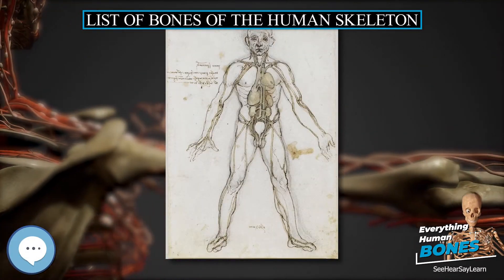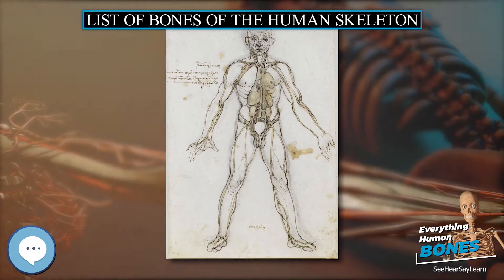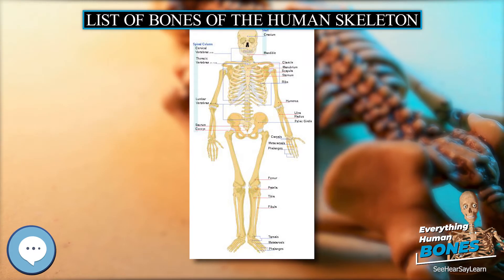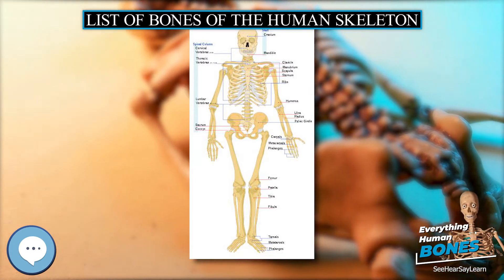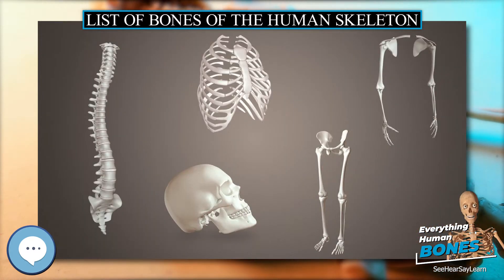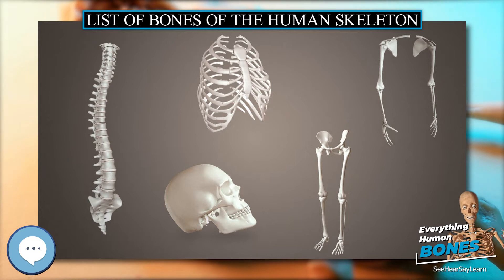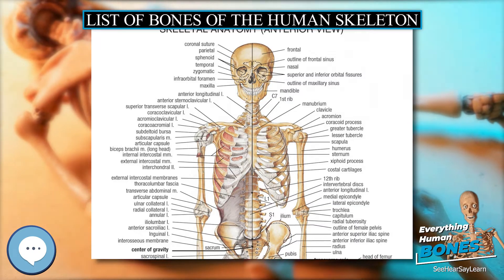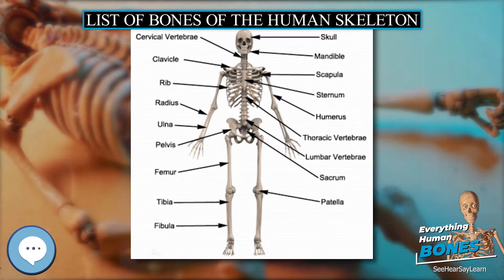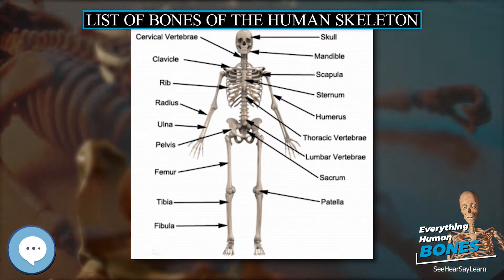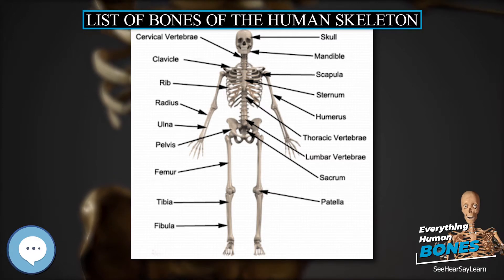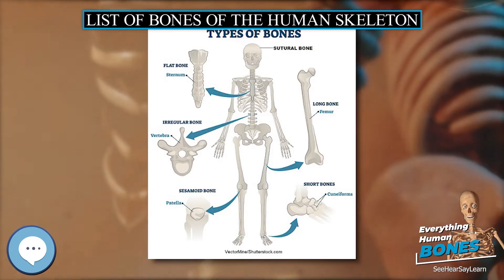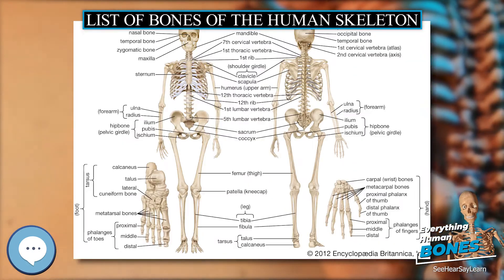List of Bones of the Human Skeleton. The human skeleton of an adult consists of around 206 to 208 bones, depending on the counting of the sternum, which may alternatively be included as the manubrium, body of sternum, and the xiphoid process. It is composed of 270 bones at birth, but later decreases to 80 bones in the axial skeleton and 126 bones in the appendicular skeleton. Many small accessory bones, such as some sesamoid bones, are not included in this count.